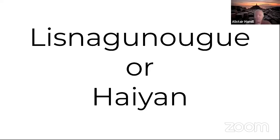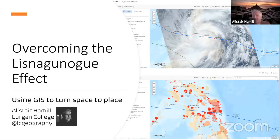Why am I starting with a tiny Northern Ireland hamlet when I'm talking about GIS? I wonder if our students, when we say place names like Haiti, have a similar experience to what you just had with Lisnagunna — absolutely no real meaningful sense of place; it remains an abstract space. Now let me reveal the title: 'Overcoming the Lisnagunna Effect: using GIS to turn space into place.' The Northern Ireland GCSE specification asks us simply to look at the impacts of tropical storms on people and buildings — exam-friendly but absolutely awful geography, pretty much decontextualised and meaningless.